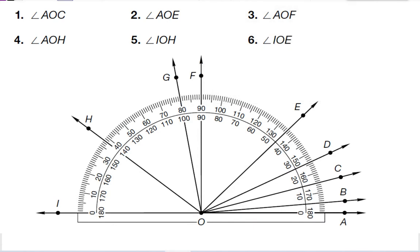Alright, so with these angles, we have angle AOC. So first we need to find it. I'm going to start at A, go to O, and then go to C. So the angle I'm looking at is this angle right here. To measure this angle, I'm going to look at where angle C is pointing at. If we follow the line, you can see that the line goes through right here.